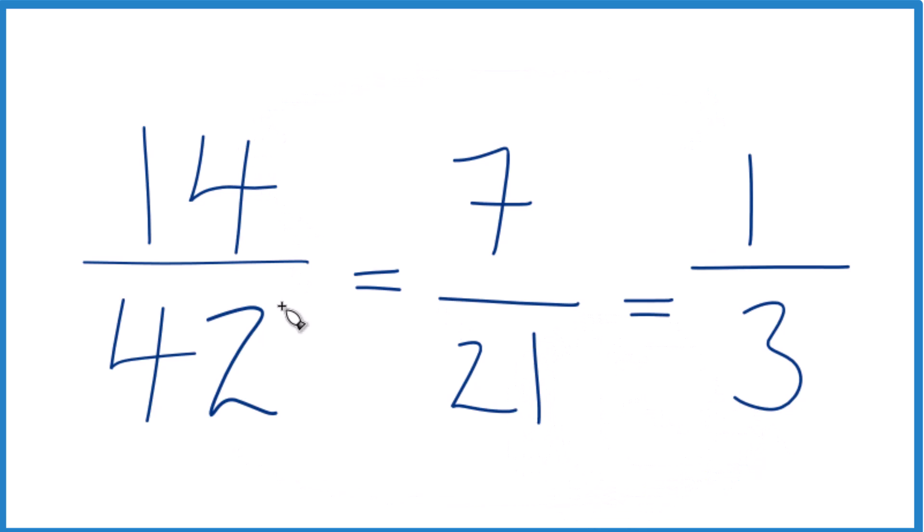Either way, 14 over 42 simplified is 1 third. This is Dr. B, and thanks for watching.